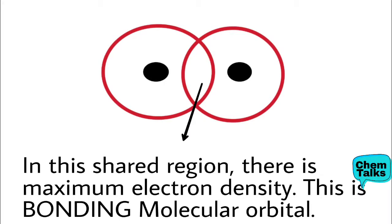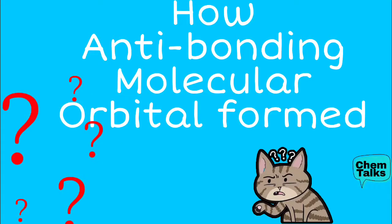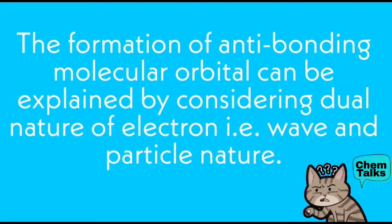Now this is the anti-bonding molecular orbital — it is not the case of bonding. To understand anti-bonding molecular orbital formation, we recall from the structure of atoms unit that the electron shows dual nature, that is both wave nature and particle nature. The formation of molecular orbitals can be understood in terms of constructive or destructive interference of electron waves of the combining atoms.